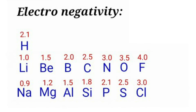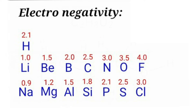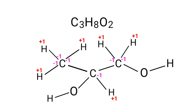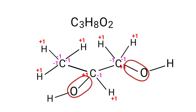As per the electronegativity chart, oxygen has more electronegativity than carbon. So in C-O bonds, the oxygen atoms take the bonds towards itself. Therefore the oxidation number of carbon is +1 and the oxidation number of oxygen is -1.